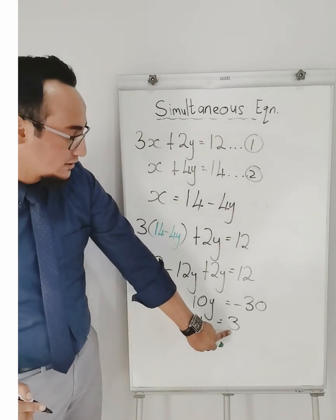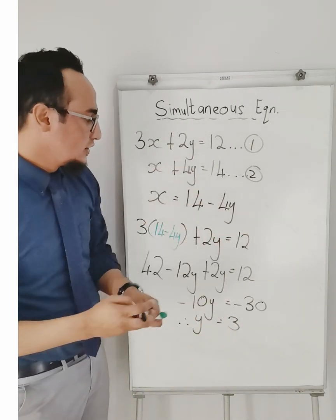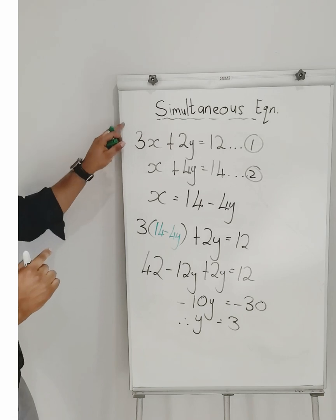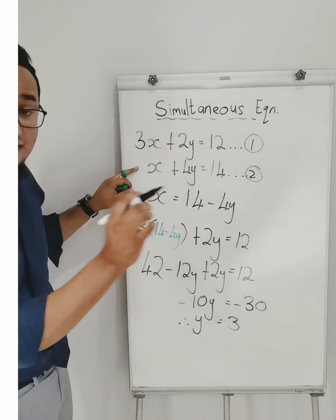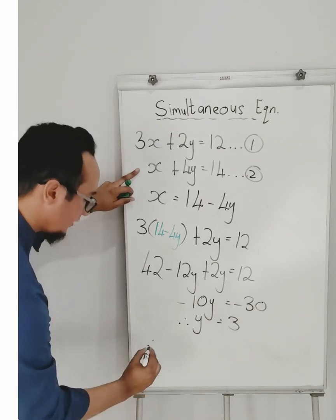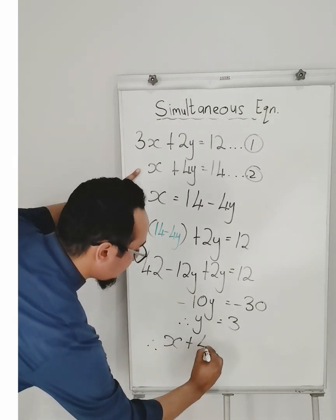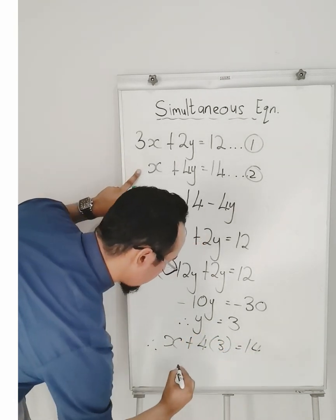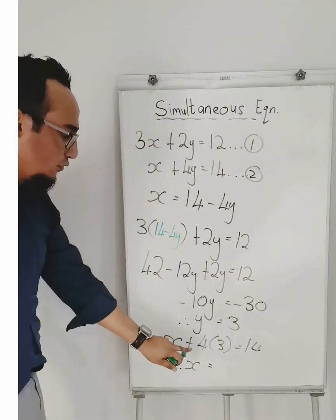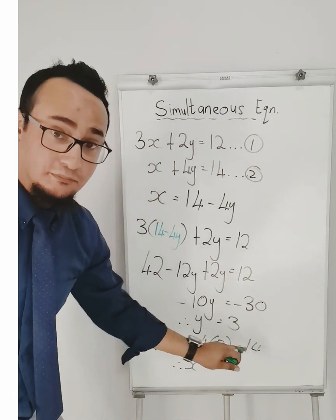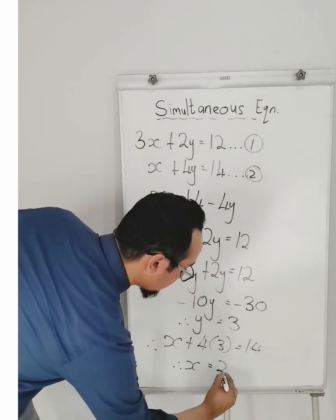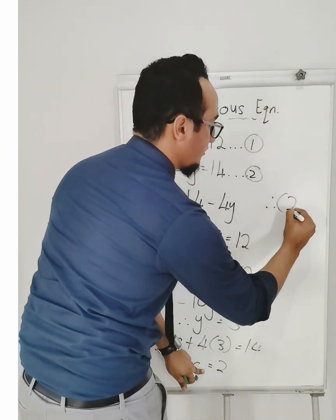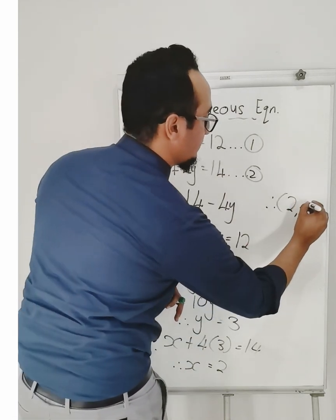Now whatever y is, I substitute into any equation to solve for x. I'm going to use the second one again because it's the easiest. So therefore, x plus 4y — and y is 3 — is equal to 14. Therefore x is equal to 14 minus 4 times 3, which is 12. So 14 minus 12 is equal to 2. And therefore the point is: x equals 2 and y equals 3.